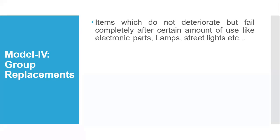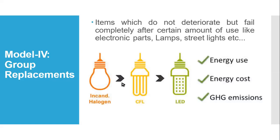In group replacement, if there are certain cases where changing all bulbs at a set interval — say every two years — rather than replacing individual failed bulbs one by one, the group replacement can save a larger amount. When comparing both cases, group replacement is often more feasible and cost-effective than singular replacement.